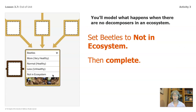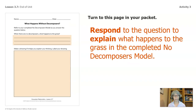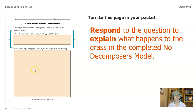You'll model what happens when there are no decomposers in an ecosystem. If you're on a computer, set the beetles to not in ecosystem, then complete the rest. There's always a thinking tool to go with a simulation, so turn to this page in your packet: What happens without decomposers? Respond to the question — explain what happens to the grass in the completed no decomposers model. When there are no decomposers, what happens to the grass? The other half of this page suggests that you draw if it helps explain your thinking. I'm going to say you should draw first because it will help support your thinking.